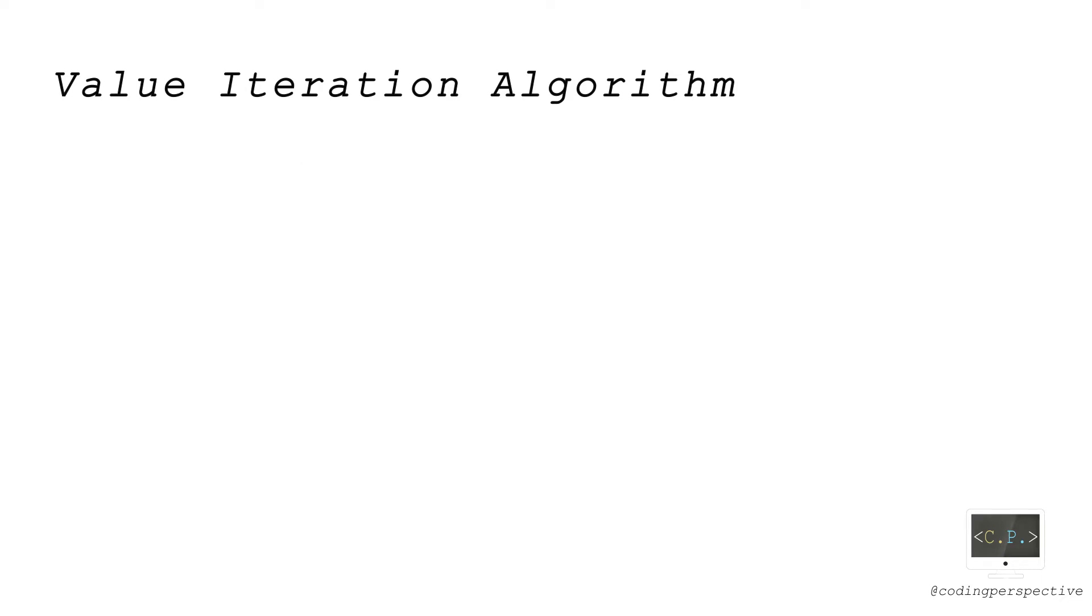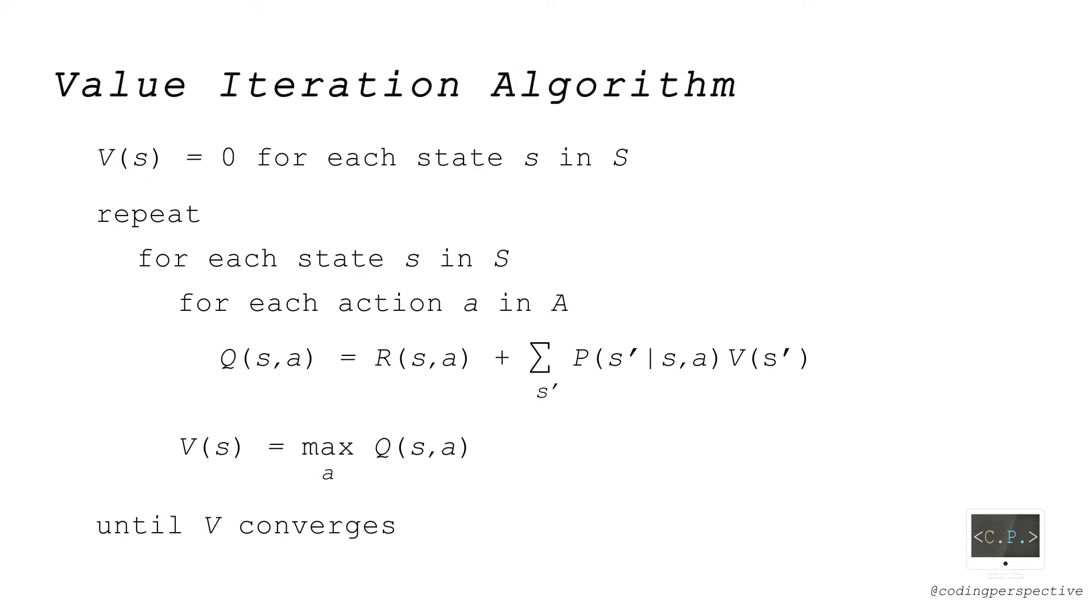In the value iteration algorithm, we will calculate the value functions iteratively until they converge. As an initial step, we set the value functions to zero. Then, we repeat calculating V(S) for each state S until it converges. To calculate V(S), we first calculate Q(S,A) as an intermediate step for action A, then take its maximum over A.